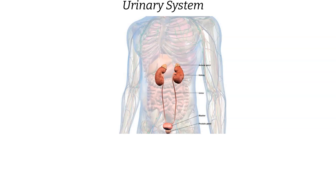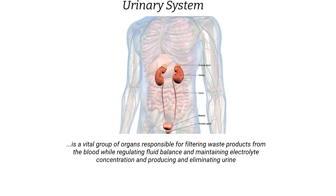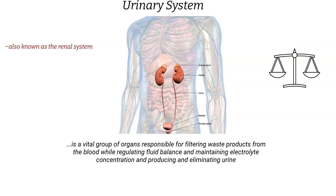Now let's delve into the urinary system — the body's filtration and balance system. Like a water purification and filtration system, our kidneys remove waste and regulate fluid and electrolyte levels. Also known as the renal system, it filters waste products from the blood, regulates fluid balance, maintains electrolyte concentration, and produces and eliminates urine, playing a crucial role in maintaining the body's internal environment and ensuring overall homeostasis.